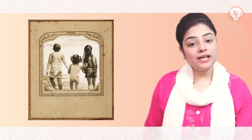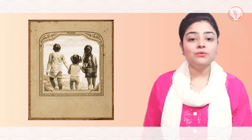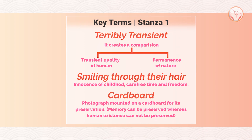The first stanza describes the poet looking at a photograph of her mother's childhood, in which her mother is twelve years old. She went with her two girl cousins, Dolly and Betty. All three girls are standing on a beach, where the sea water is touching their feet. They are holding each other's hands and smiling, posing for the photograph that their uncle is taking. Now we have to notice three key terms in this stanza. The first and most important one is 'terribly transient feet', the second is 'smiling through their hair', and the third is 'cardboard'.